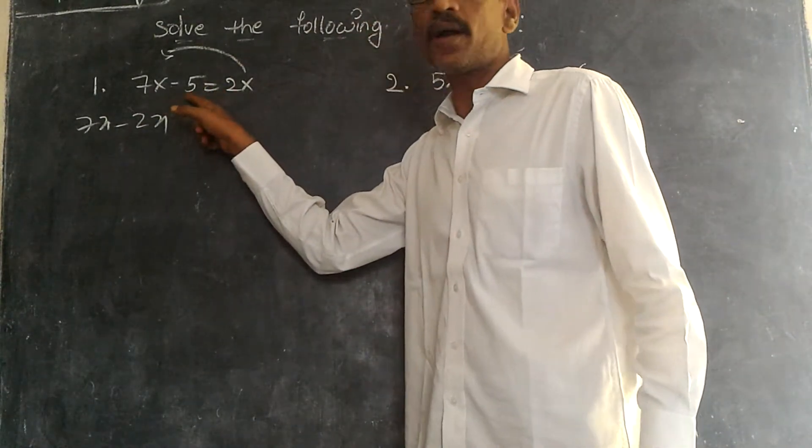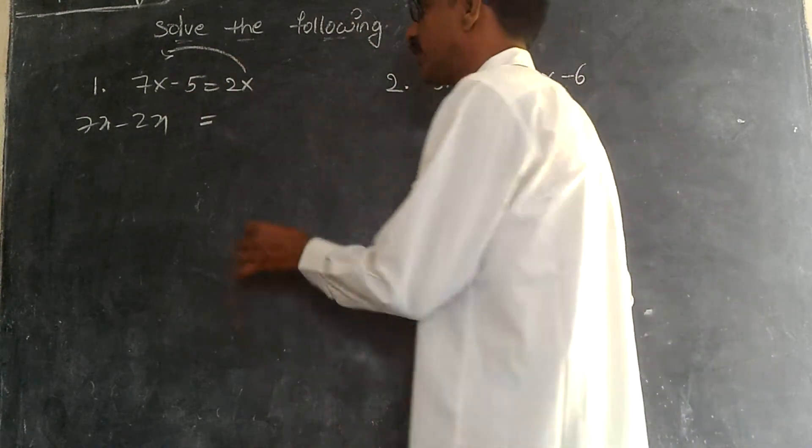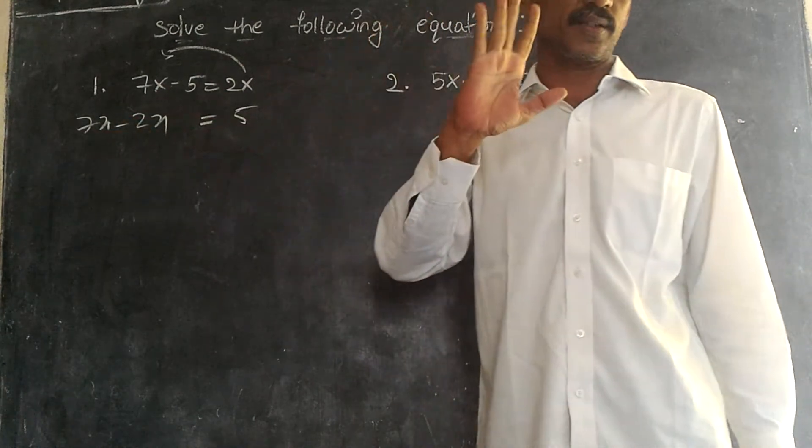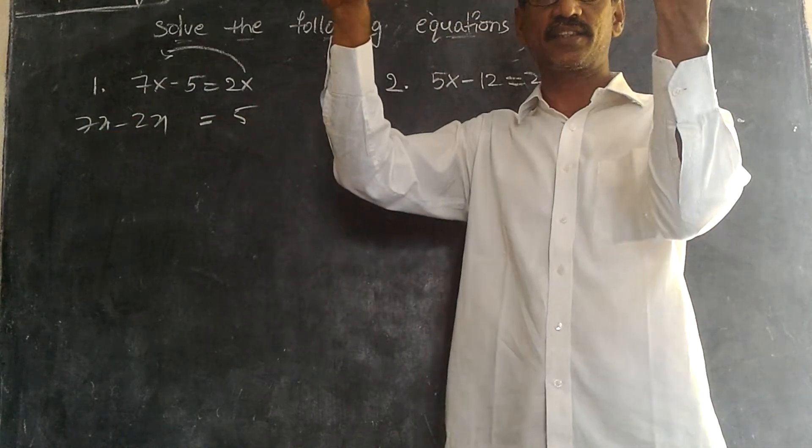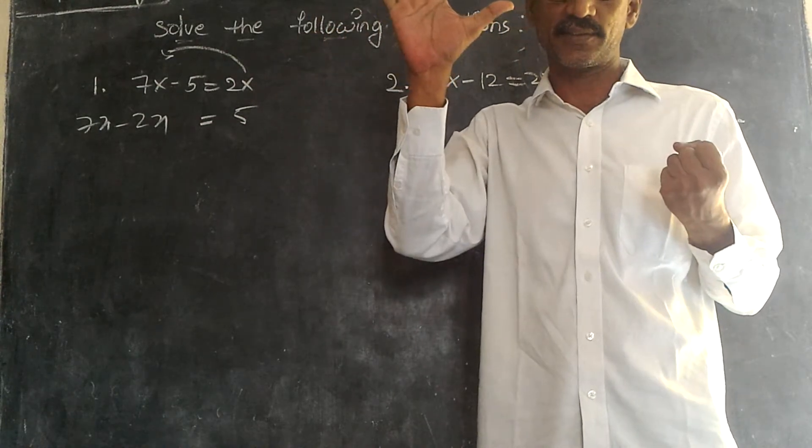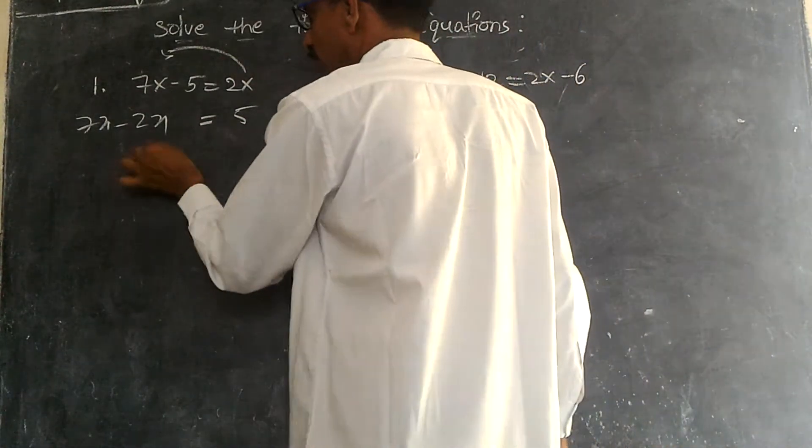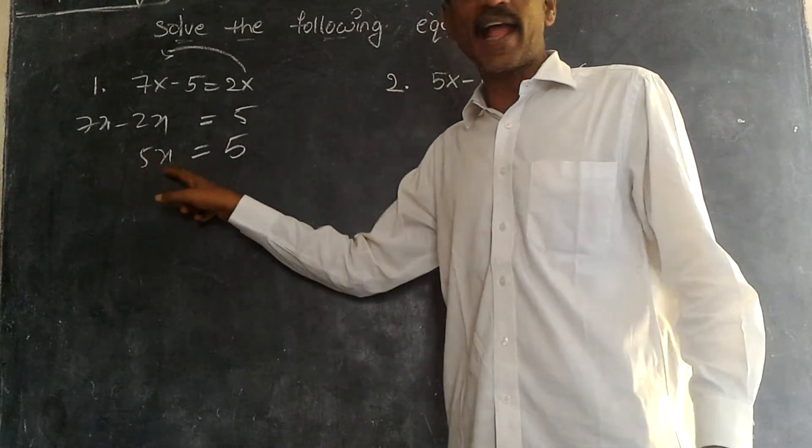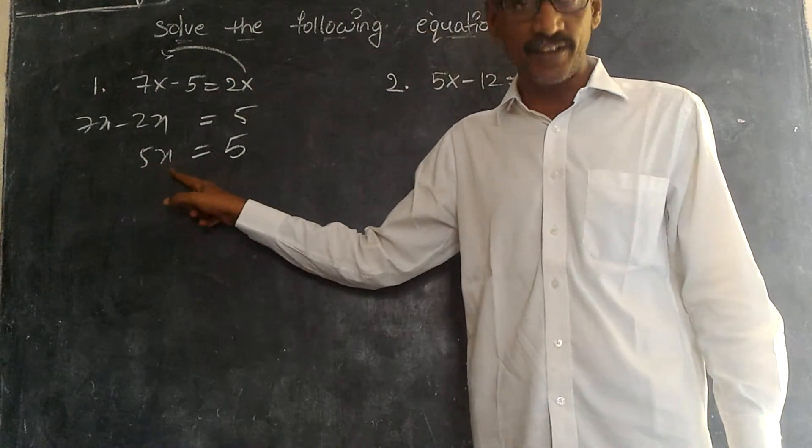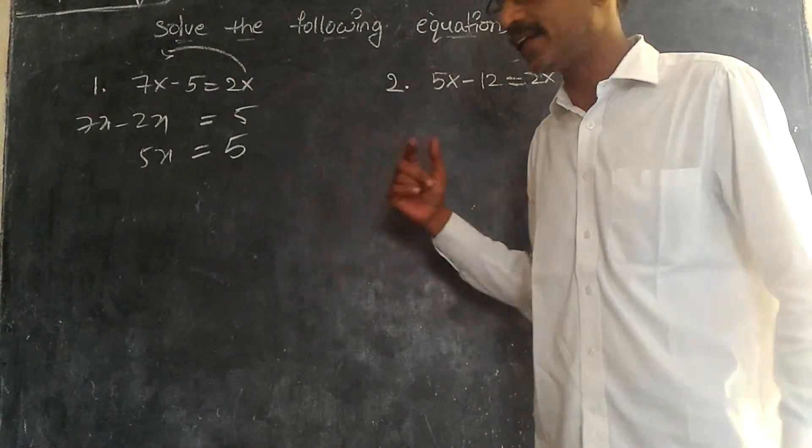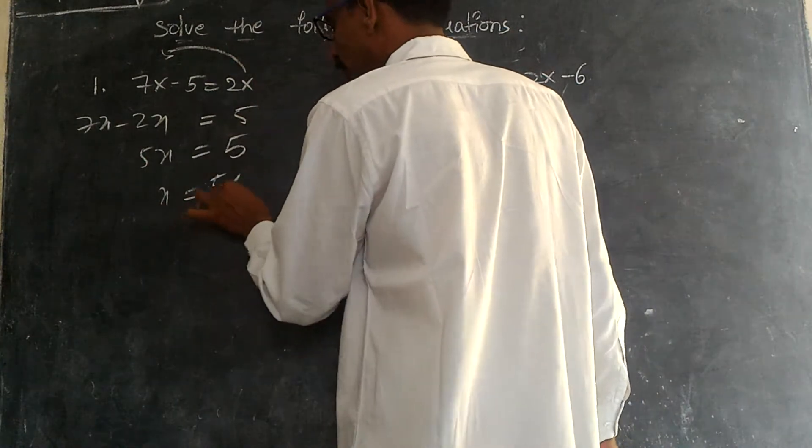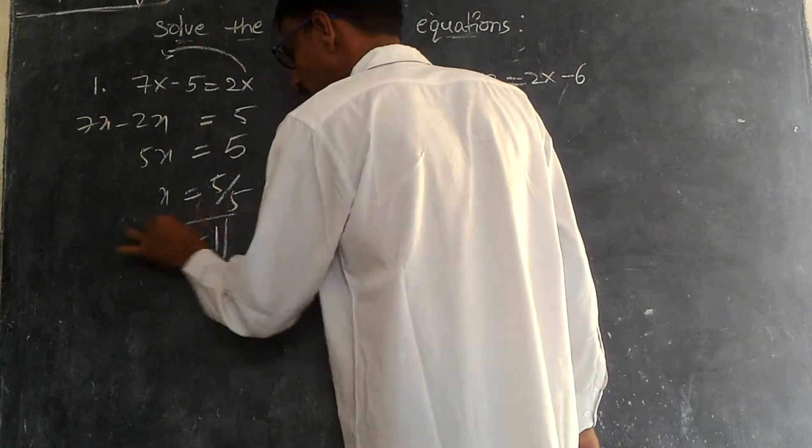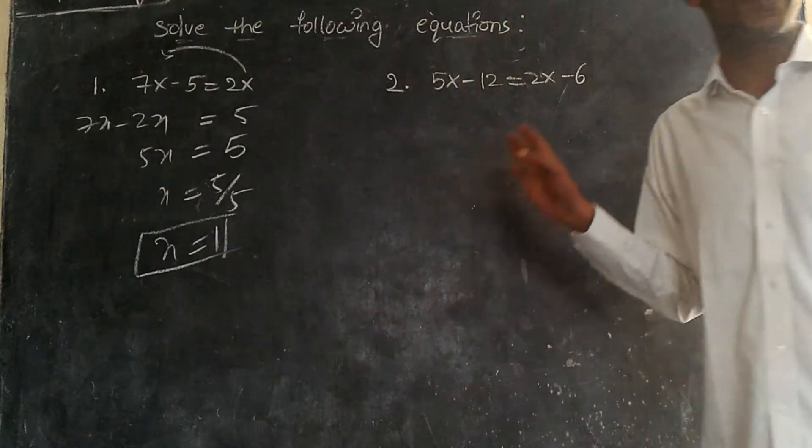This is minus quantity will go this side. x is equal to 5 divided by 5. This is nothing but x is equal to 1. Is it clear or not? Clear.